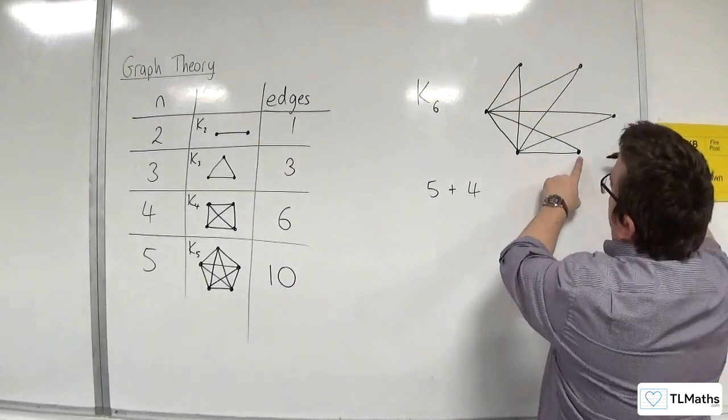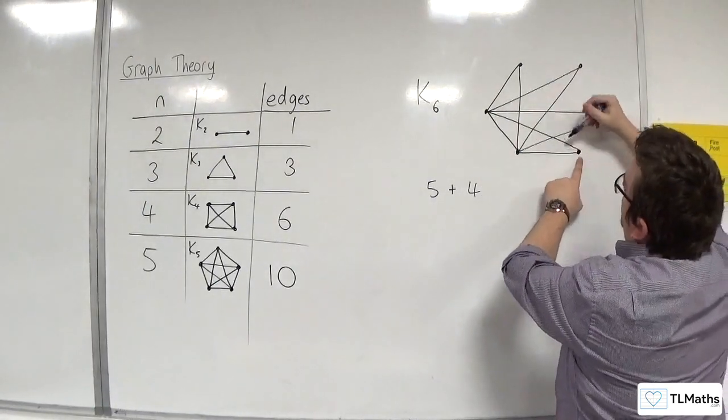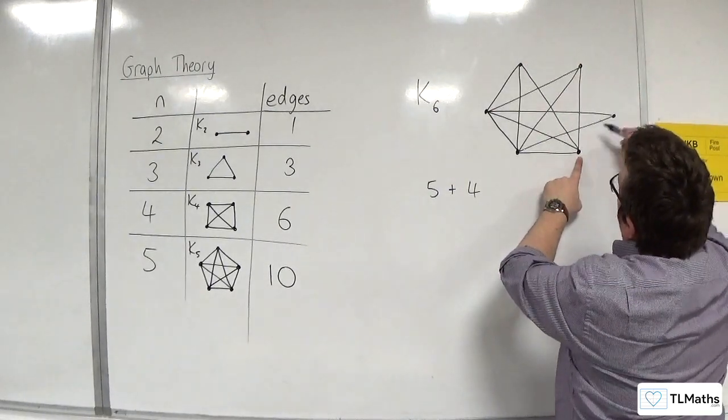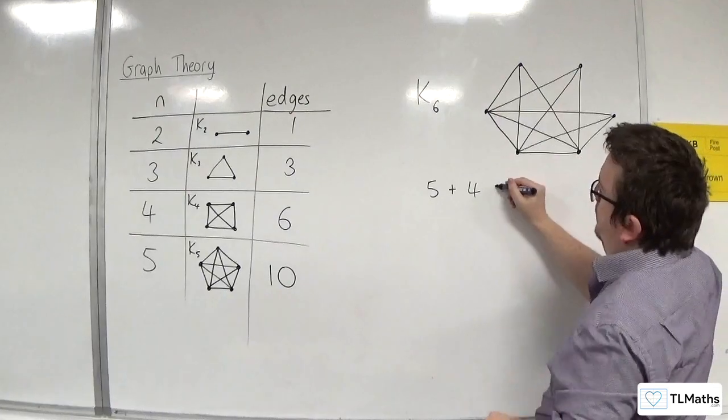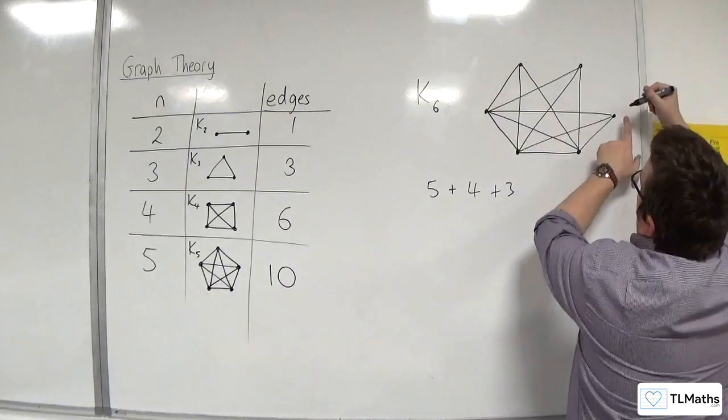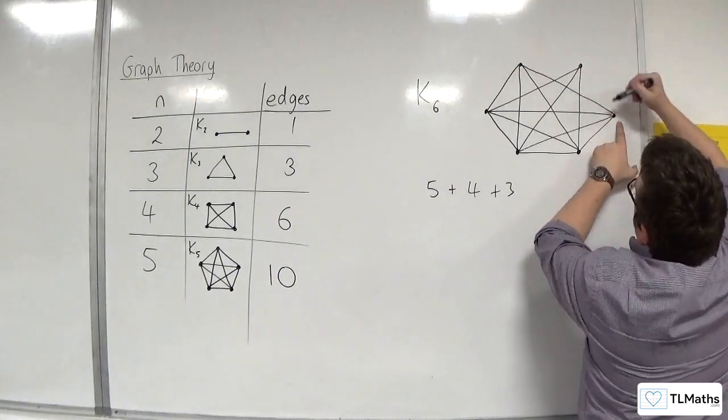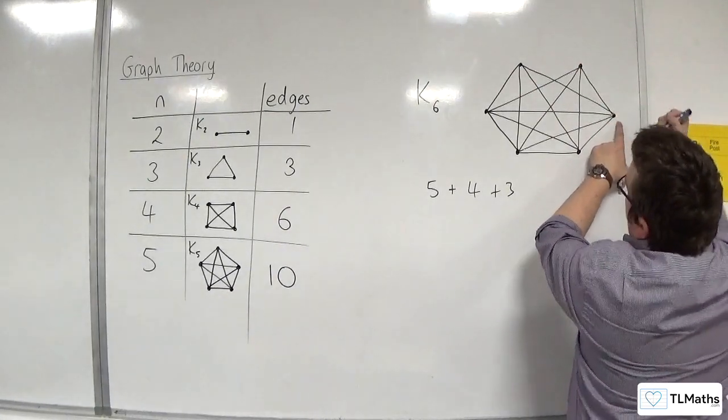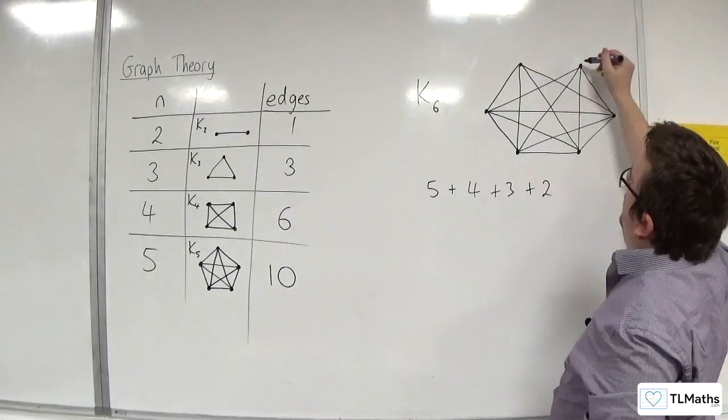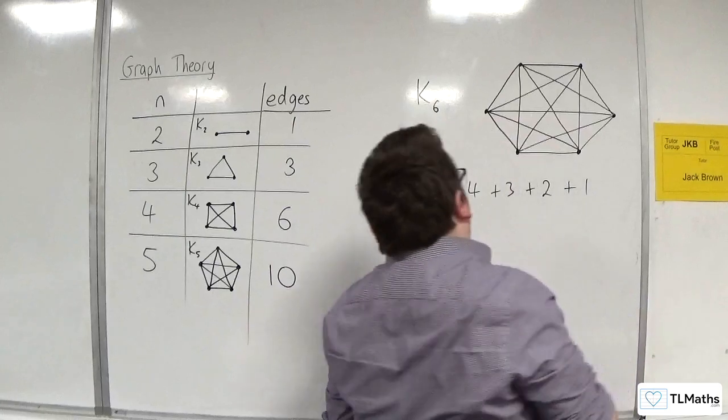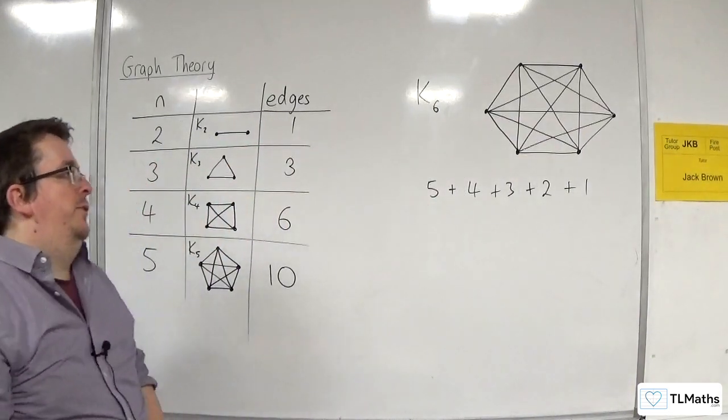Then, we go to the next one. We've already collected those two. So, 1, 2, 3. Then, from this one, we've already collected those three. So, we're going to go 1, 2. And then, from this one, 1.